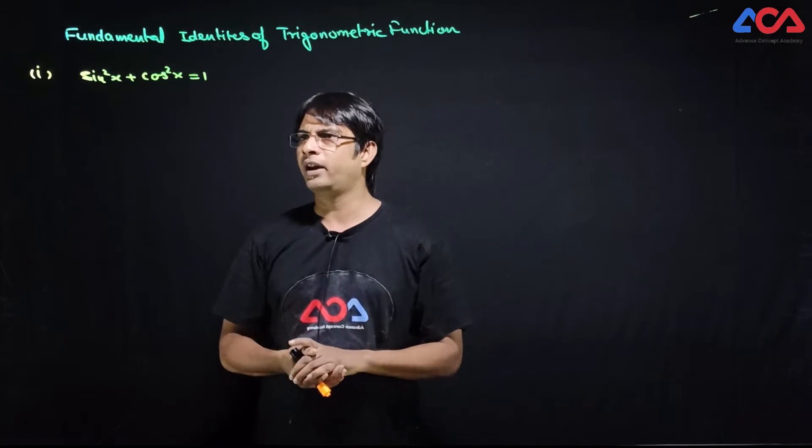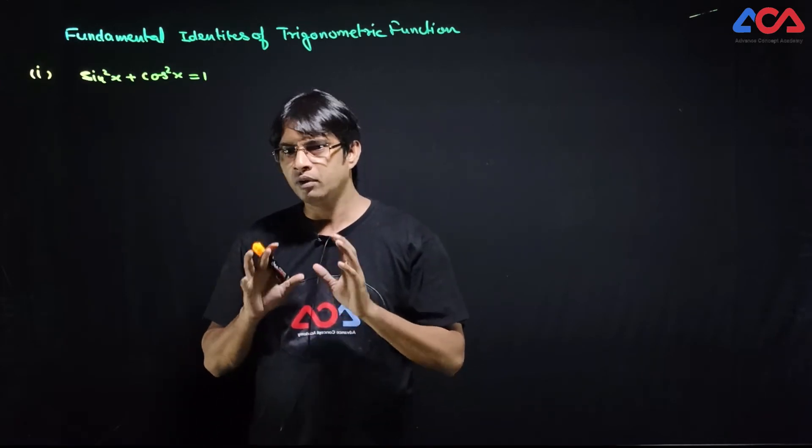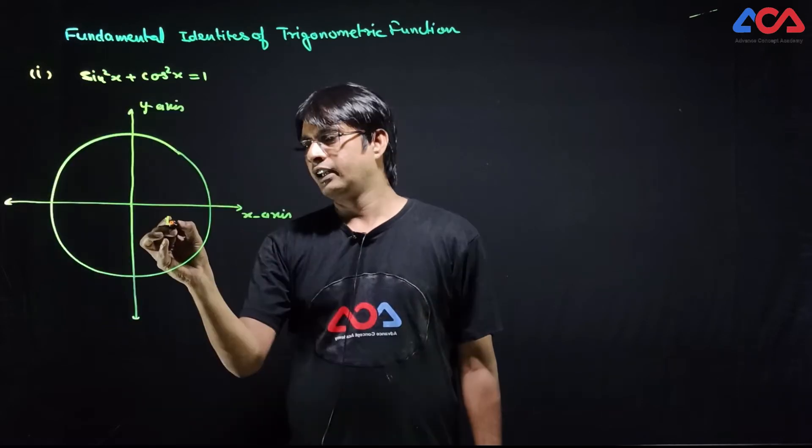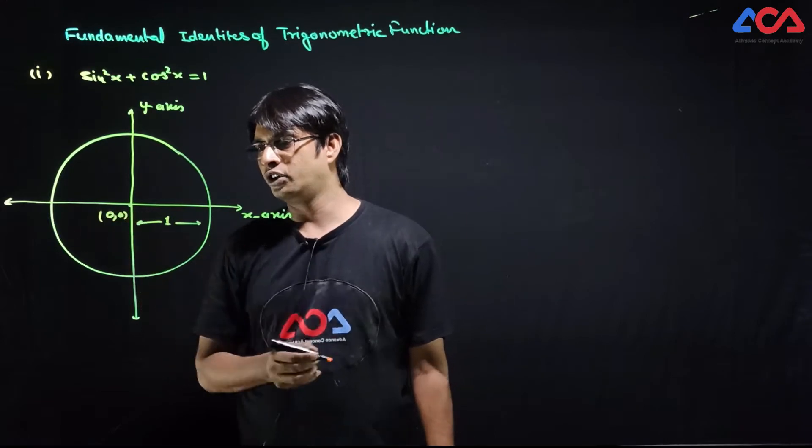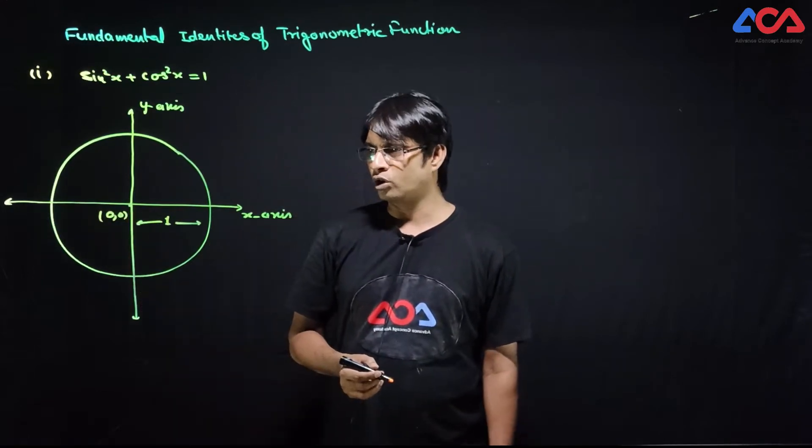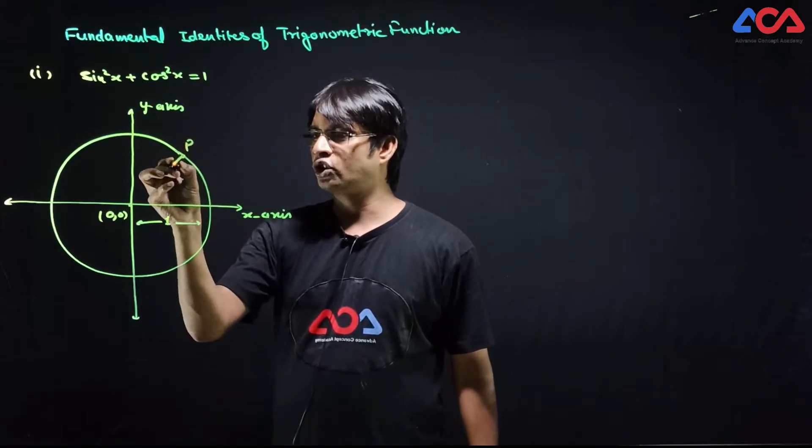The first identity is sin²x + cos²x = 1. First, we will make a unit circle. The radius is one unit, center at the origin, so the coordinate is (0,0). We take any point P and join OP.